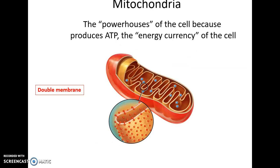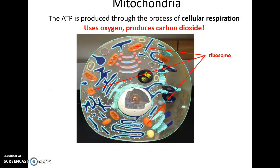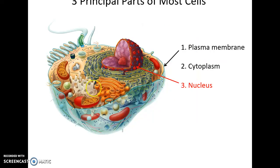Mitochondria are double-membrane structures that produce ATP — the energy currency used by the cell. This ATP production occurs through cellular respiration, which requires oxygen. That is why we breathe in oxygen and produce carbon dioxide as waste that we breathe out.